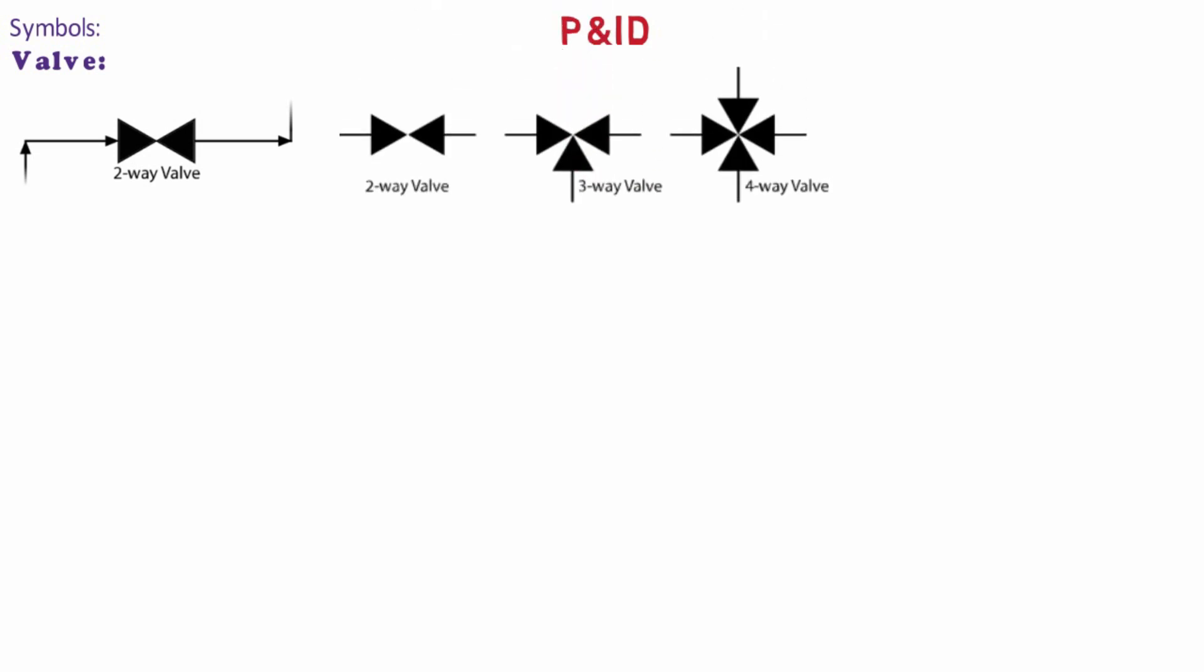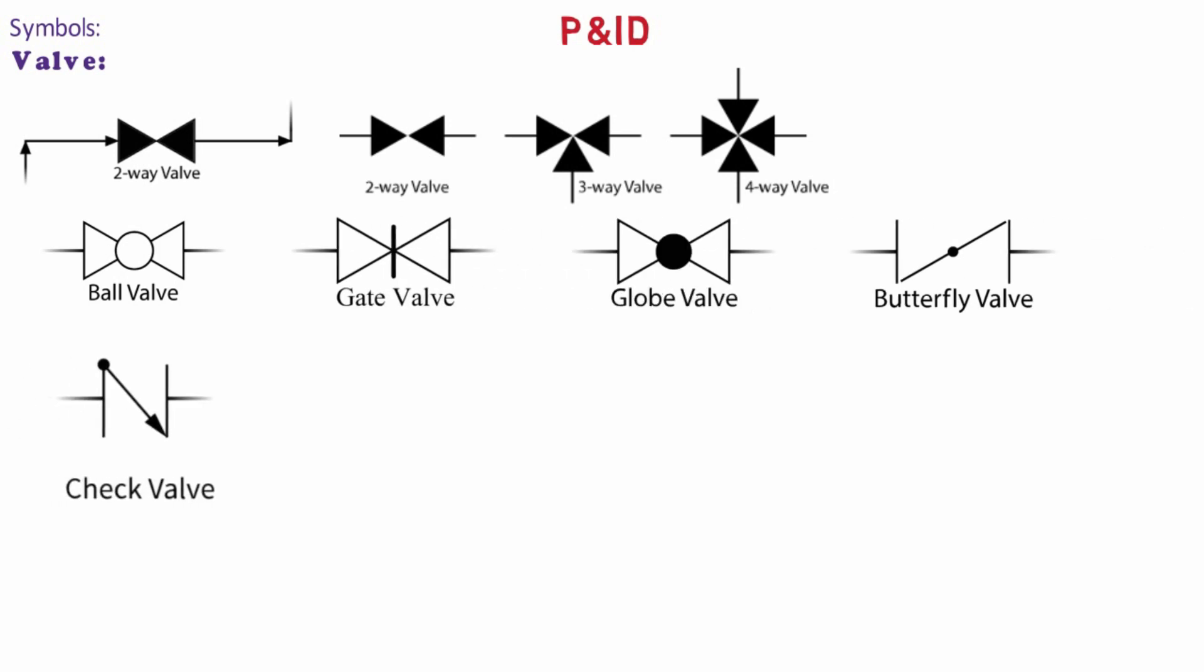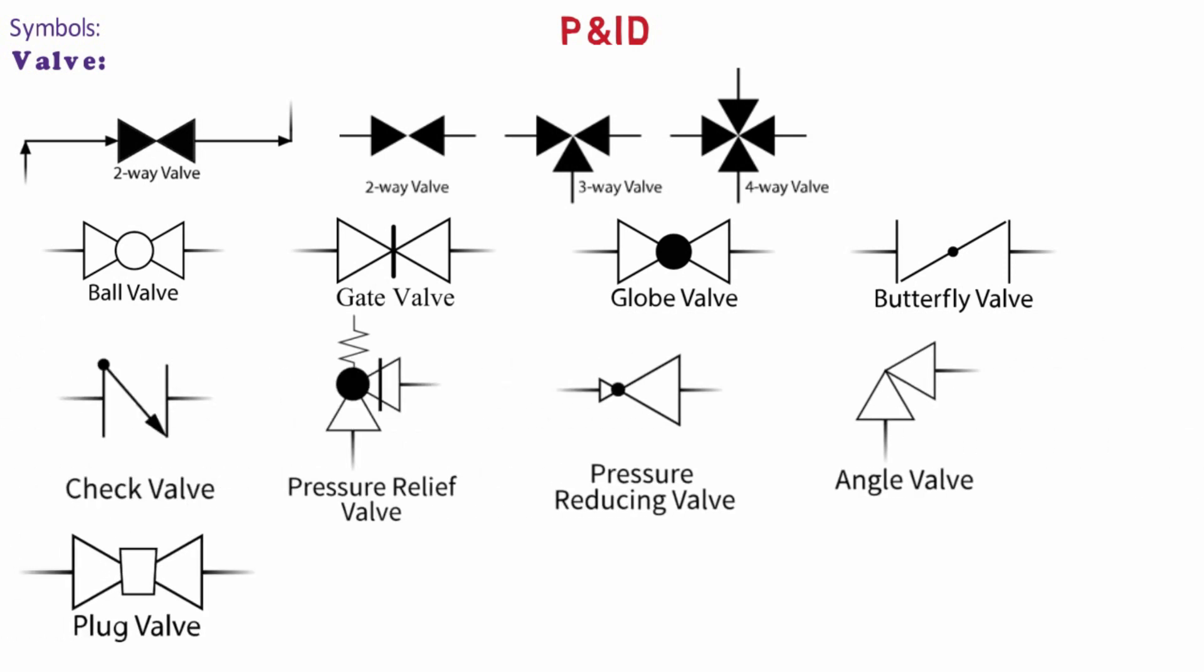This is how we show a valve connected to a pipe. This is a typical two-way valve. Likewise, there are typically three-way and four-way valves connected as shown on your screens. These are different valve symbols. Valve representation symbols vary project to project so it is always advisable to refer the legend sheet right before starting to work on P&IDs for better understanding. The basic fundamental representation of the valves are shown on your screens right now.